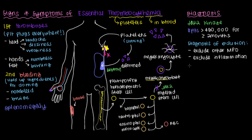Finally, though rarely done, a bone marrow aspiration can be performed to check whether there's an excess of megakaryoblasts present in the bone marrow.